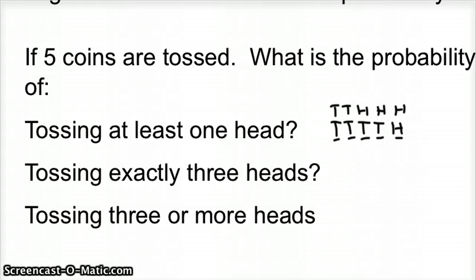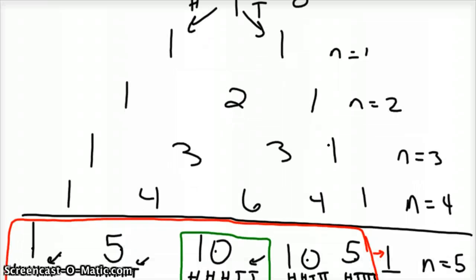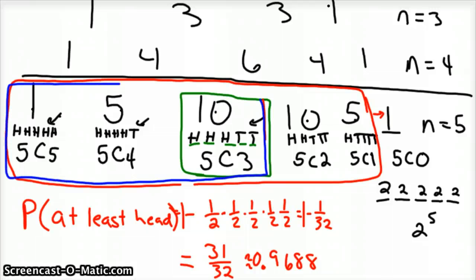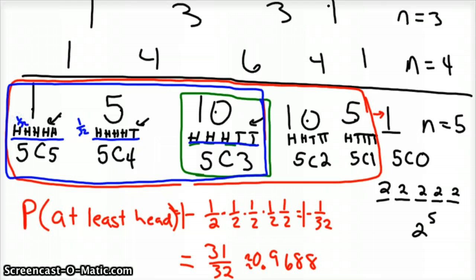The last one is tossing three or more heads. Looking at Pascal's triangle, three or more heads covers these entries. Each individual outcome — like head, head, head, head, tail or head, head, head, head, head — still has a probability of one out of 32. The difference is how many of them there are: ten with exactly three heads, five with exactly four heads, and one way to get all five heads. We need to add those probabilities together.